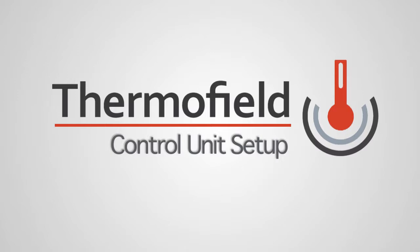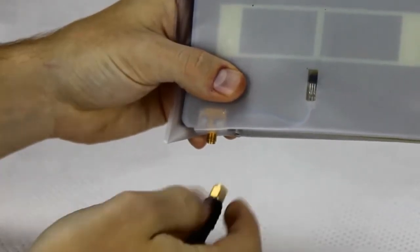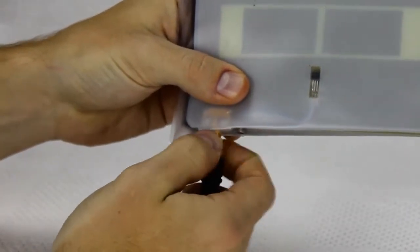After you have the unit plugged in, connect the cords to the applicator pad. To connect the black cord, twist the tip of the cord until the cord is tightened onto the applicator.